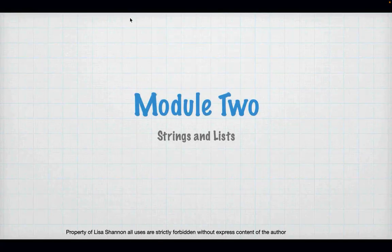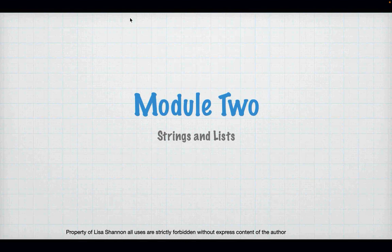So what are we talking about this week? We're talking about strings and lists. Really we're talking about strings, but we have to talk about lists because a string is a form of a list. We will go in depth into lists and collections in Module 5, but for now we're just going to introduce a little bit of lists so we can understand strings better.